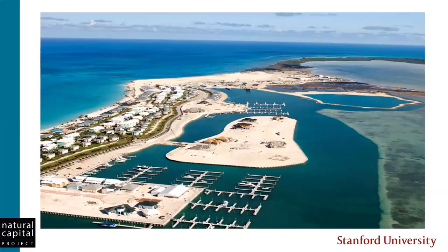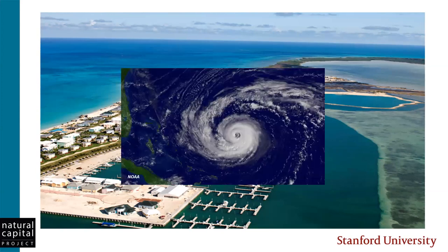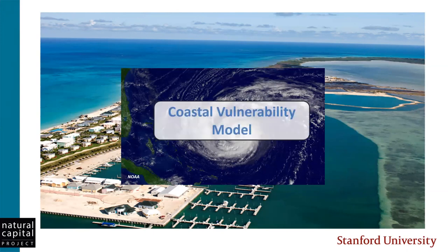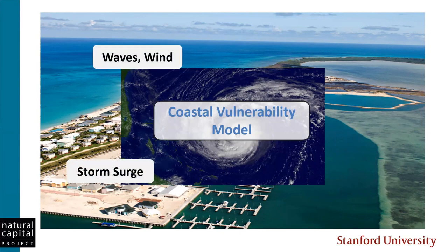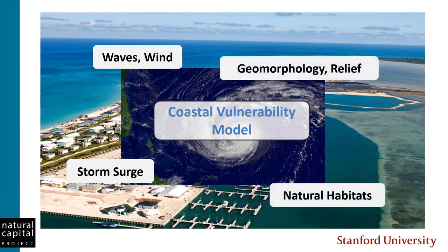The InVEST Coastal Vulnerability model is used to understand the distribution of risk of exposure to coastal hazards for people living along the coastline. It incorporates a number of different aspects of coastal and nearshore processes, including climatic forcing conditions along the coast — exposure to waves and wind, potential exposure to storm surge — and natural characteristics about the shoreline, such as the shoreline type or geomorphology, the elevation, and the presence and extent of different kinds of natural habitats.